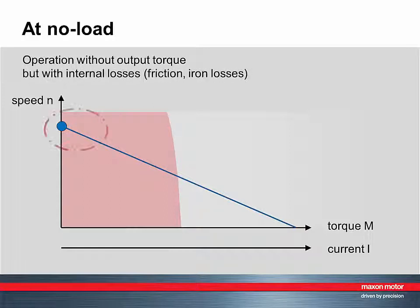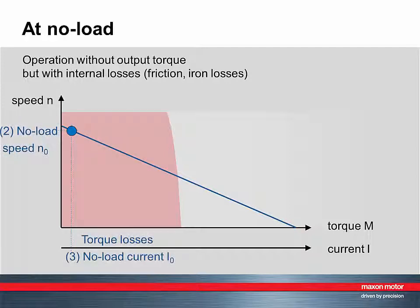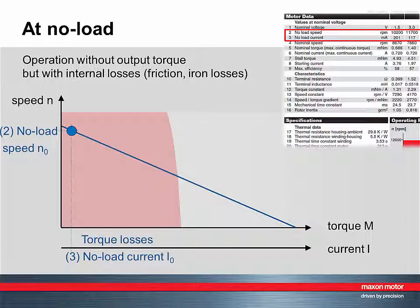The real no-load operating point is not at the extreme left, but slightly shifted along the speed torque line. There are two parameters describing no-load condition.